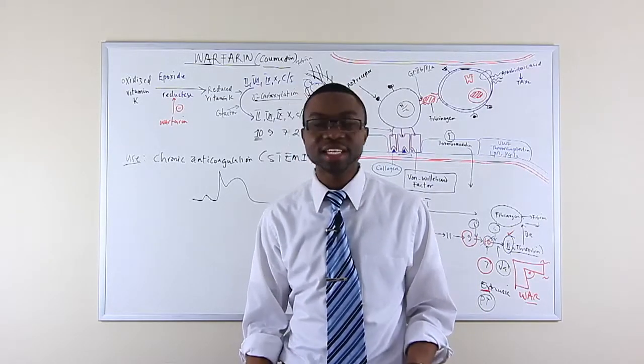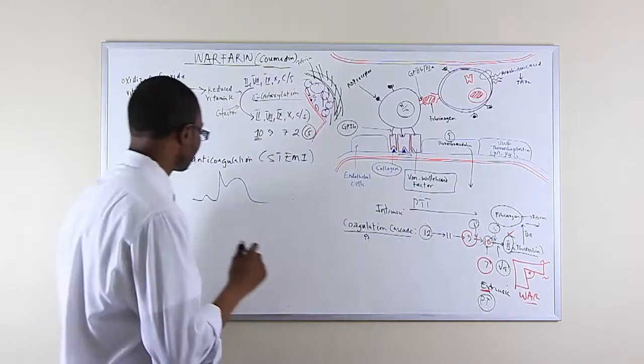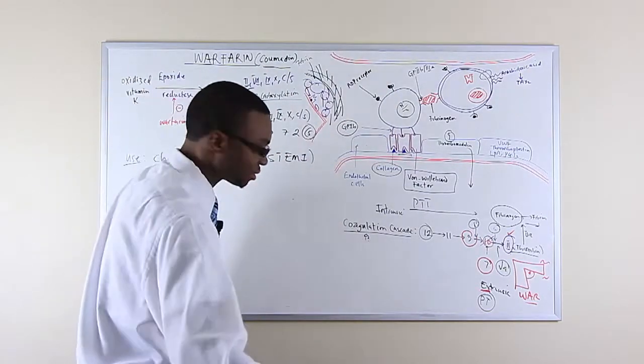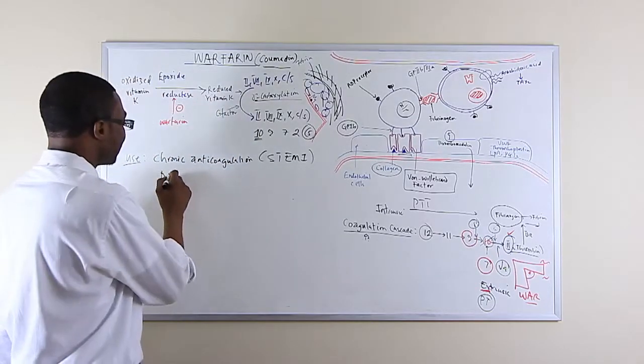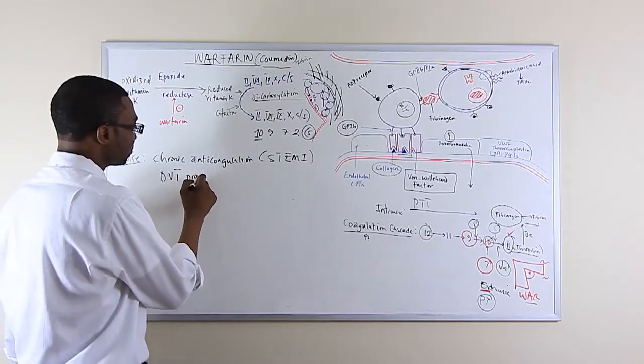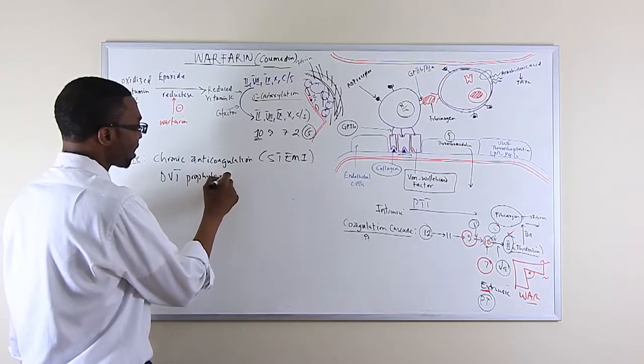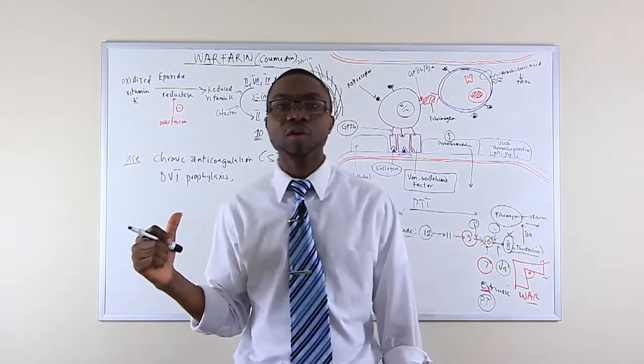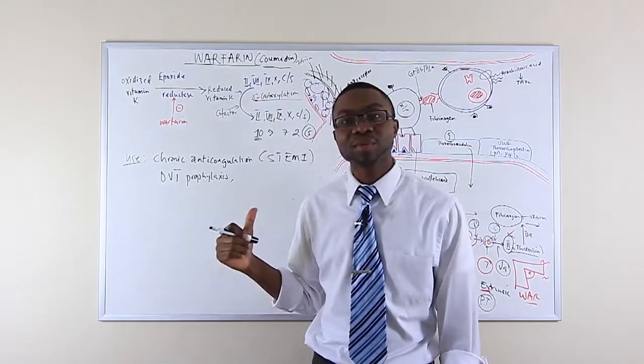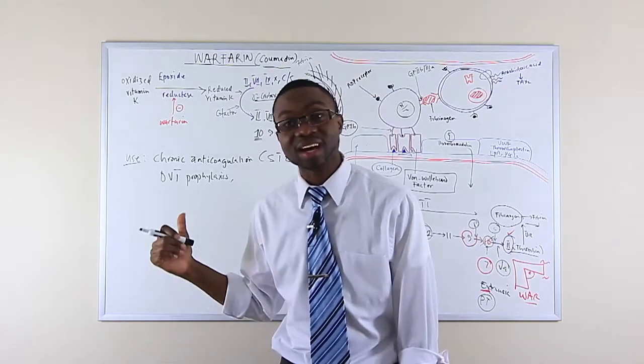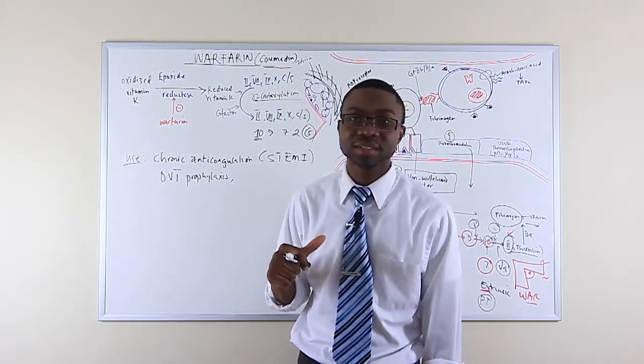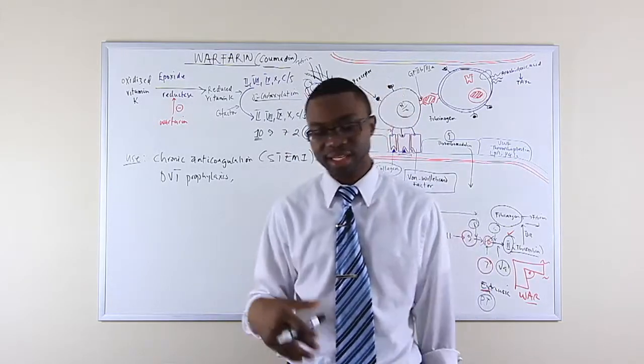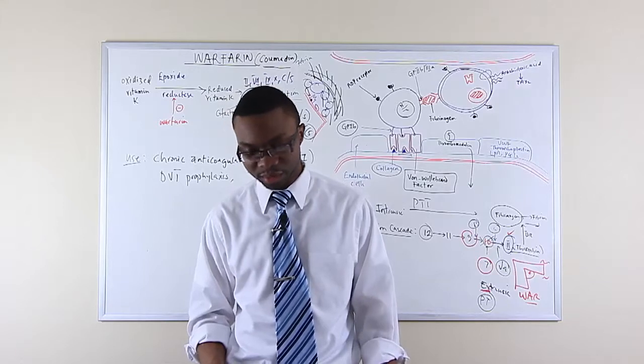We also use it for DVT prophylaxis, deep venous thrombosis prophylaxis. So if your patient has a DVT, you put them on warfarin. Why? Because when their blood is not thin, that clot is going to go and form a pulmonary embolism. So when you put them on Coumadin, the patient will have thinner blood and they'll have less likelihood of developing a pulmonary embolism.